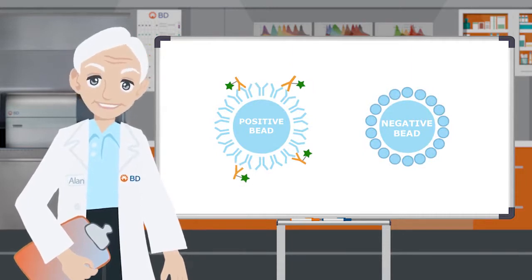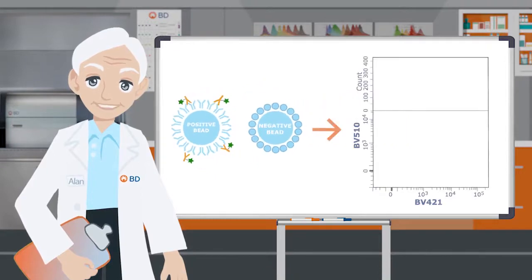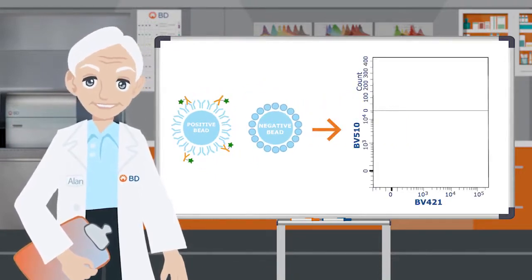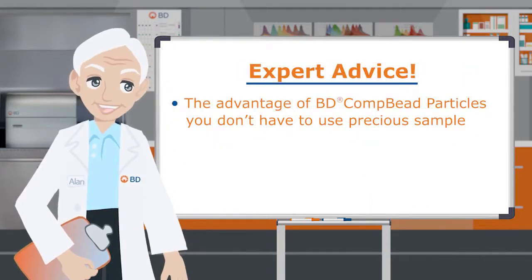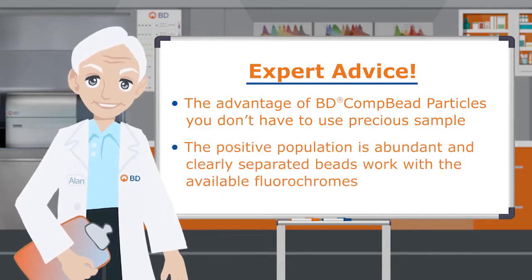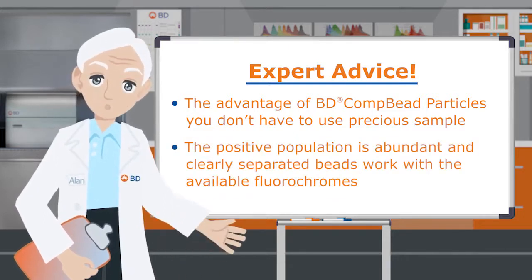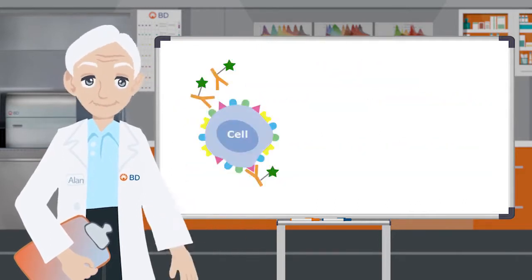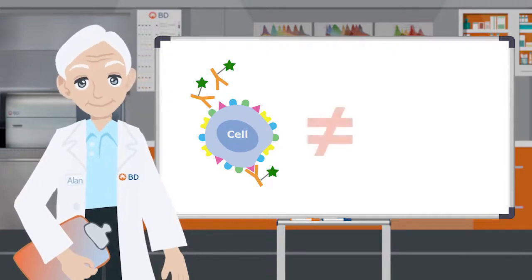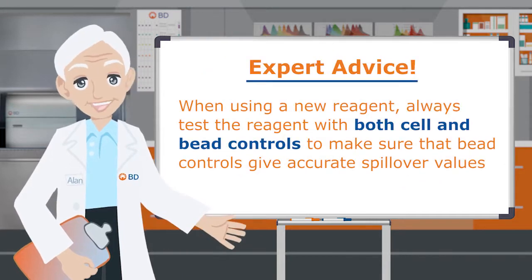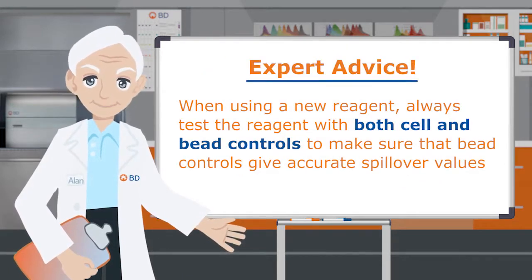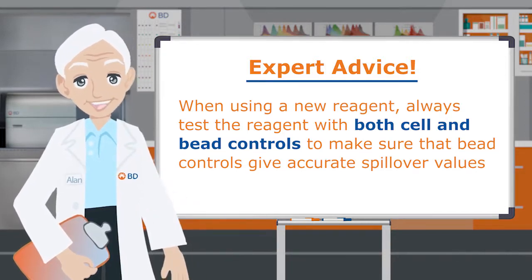When using cells is not practical, antibody capture beads can be used as a valid alternative for most fluorochromes. BDComp bead compensation particles, for example, are coated with anti-immunoglobulin that bind most fluorescent conjugated antibodies, acting as a surrogate for stained cells. The advantage of BDComp beads is that you don't have to use precious samples, and the positive population is abundant and clearly separated. The beads work with most of the available fluorochromes. However, it is important to note that for some fluorochromes, the spillover values on beads can be significantly different from similarly stained cells. So when using a new reagent, it's always best to first test the reagent with both cells and bead controls to make sure that the bead controls give accurate spillover values equivalent to cells.